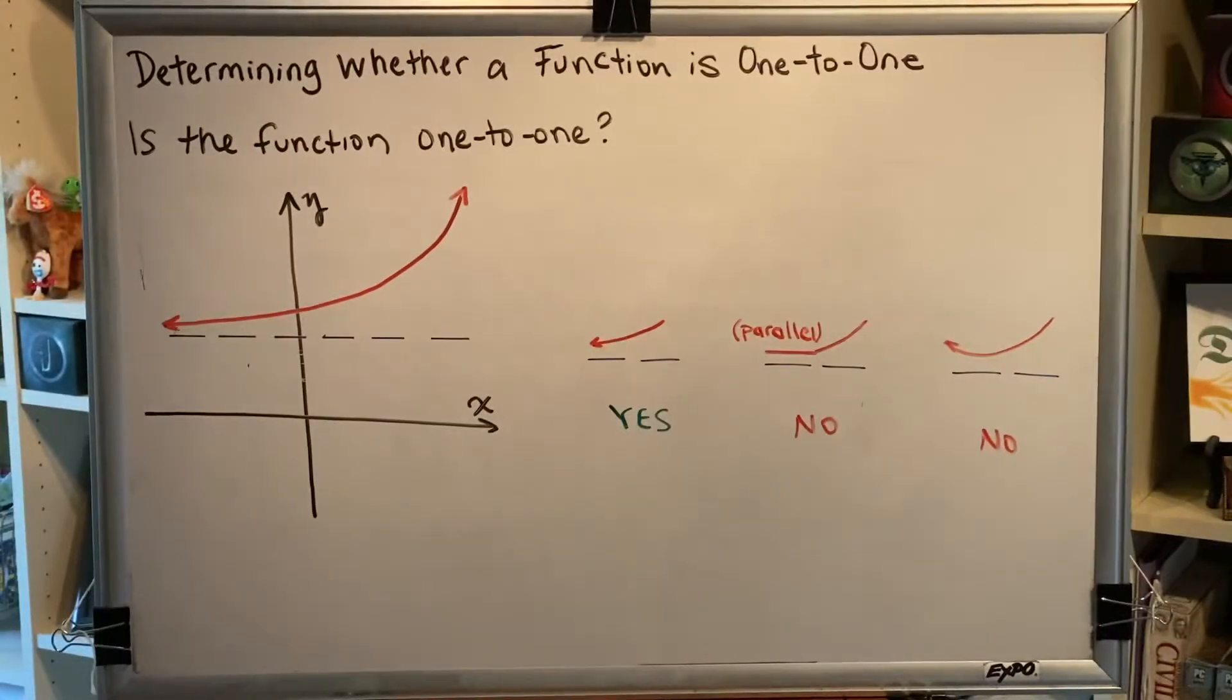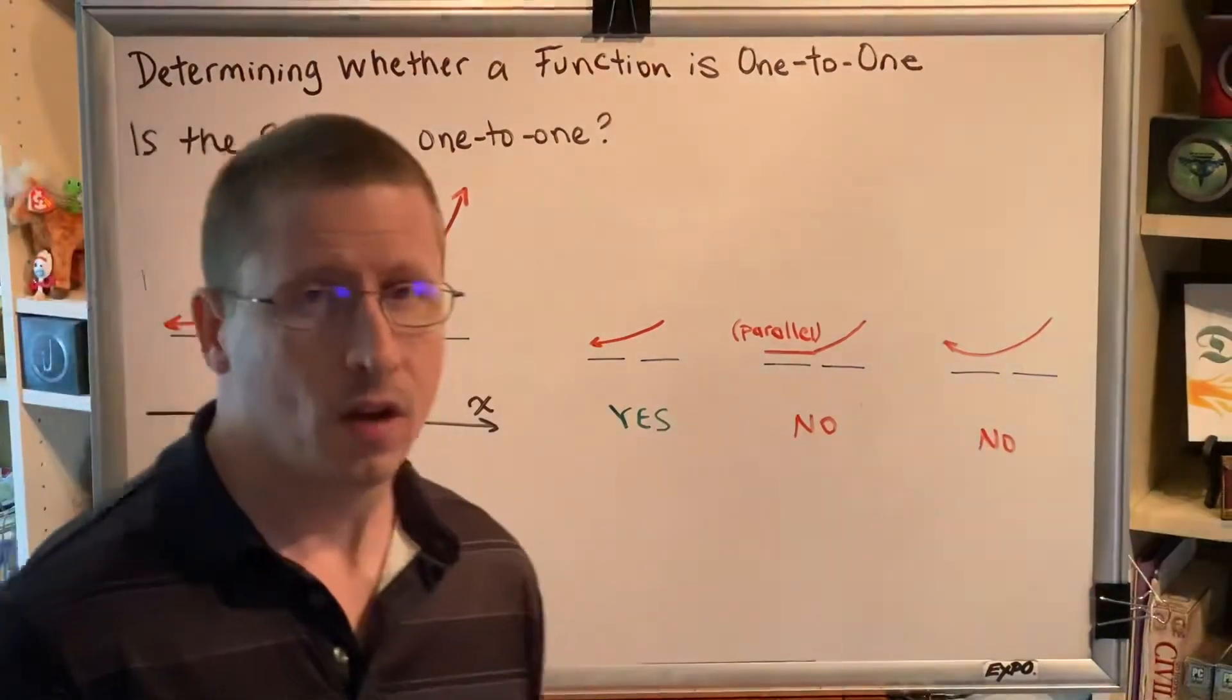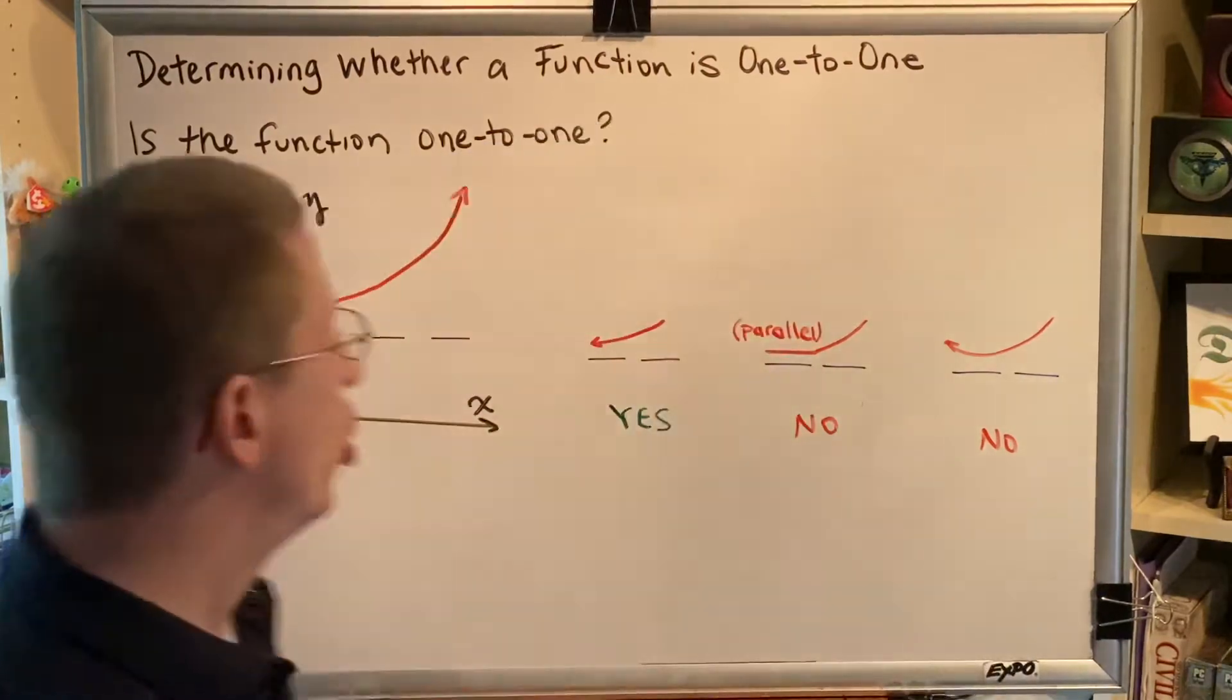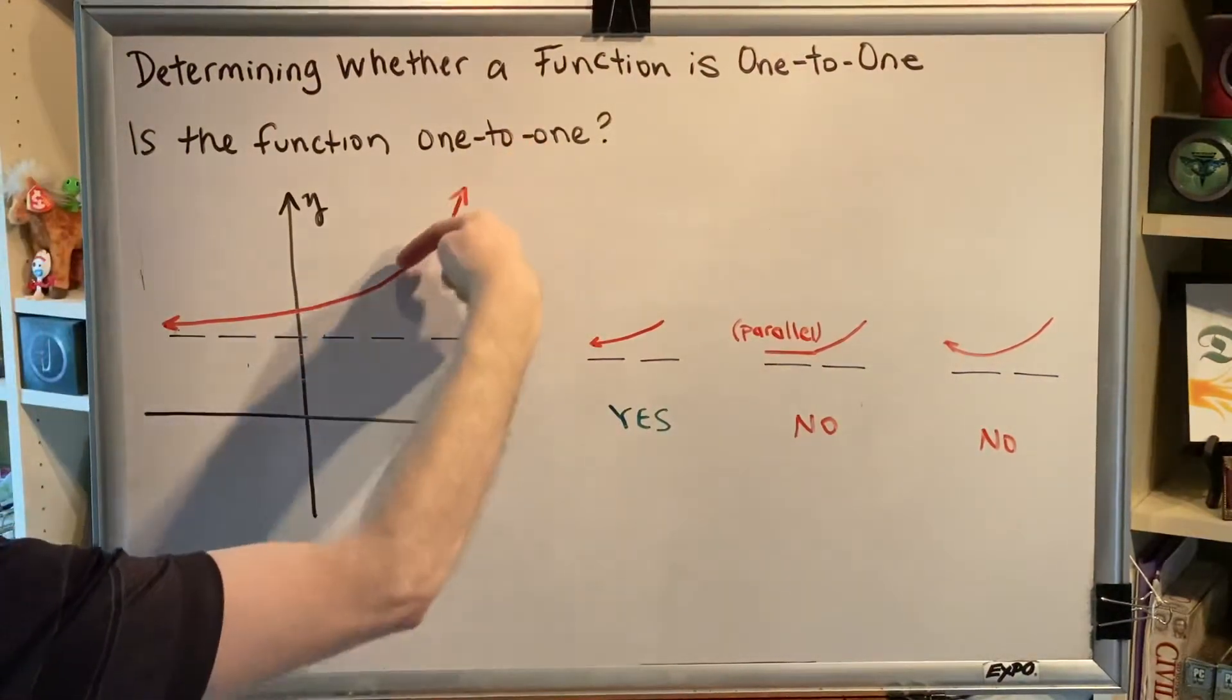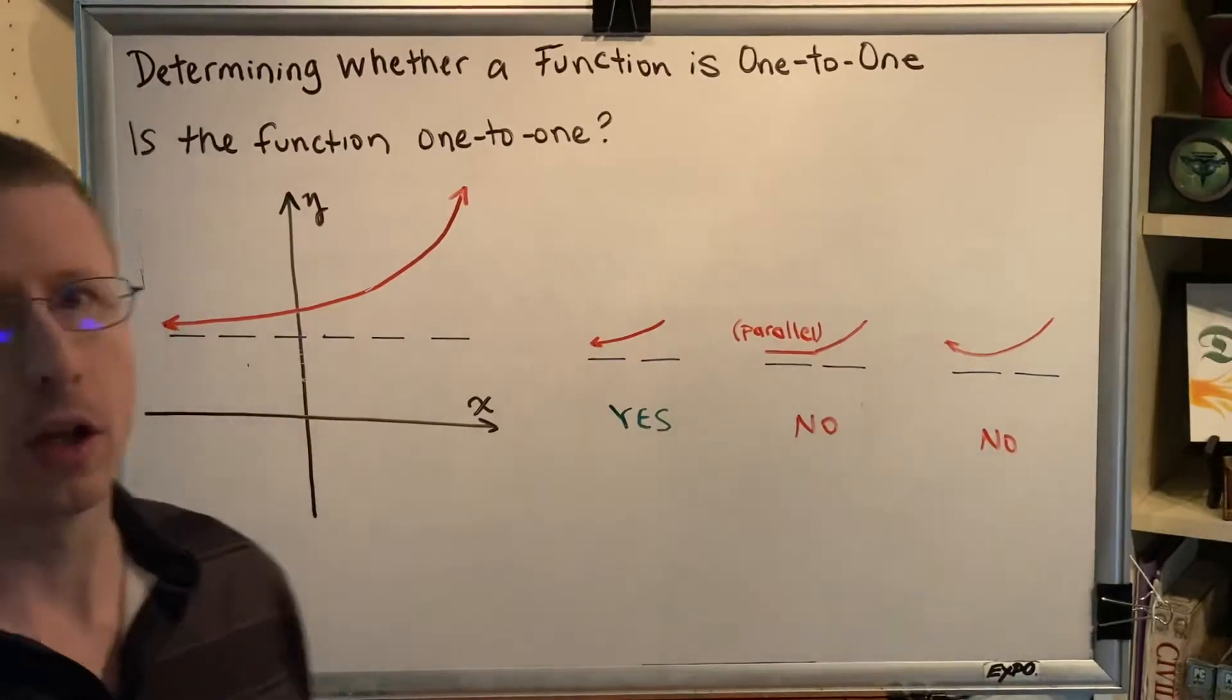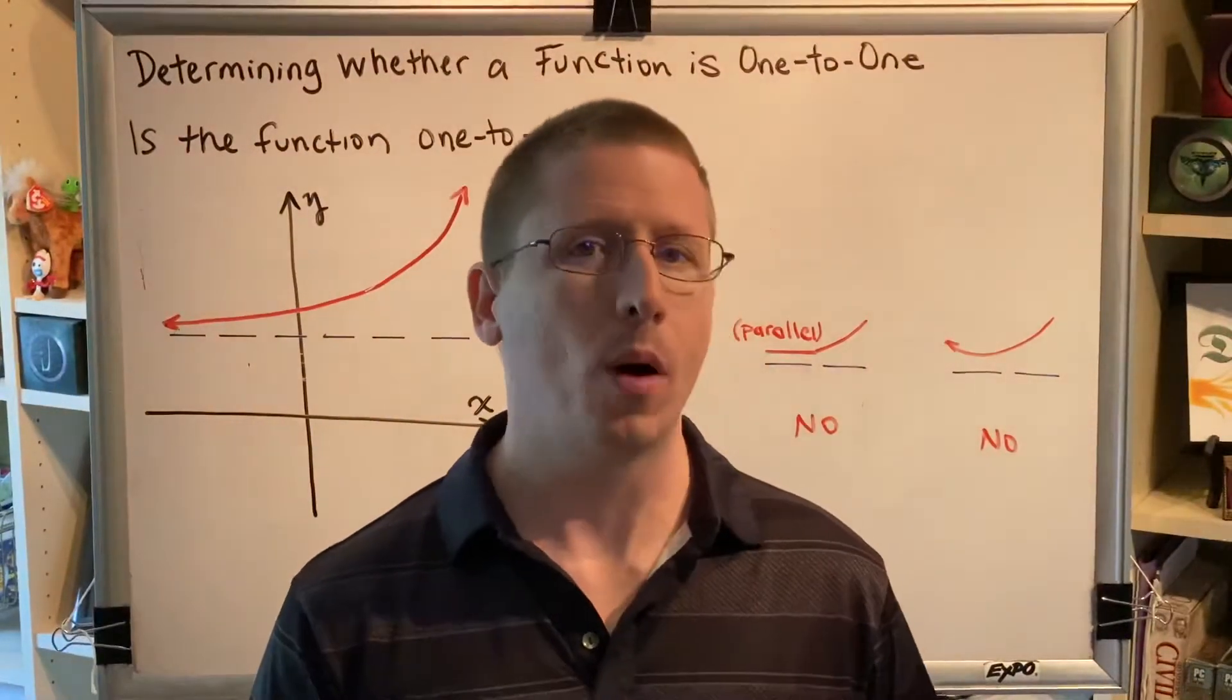All right, so first of all, let's just briefly review what an asymptote is. An asymptote is a line that a curve forever approaches but never reaches. So what that means is, as we travel from right to left, this red curve is getting closer and closer to the blue dashed line, but will never touch it.